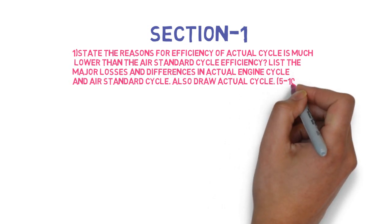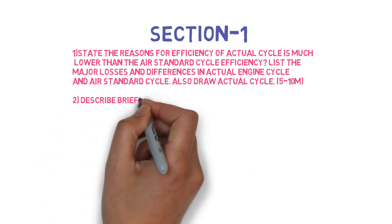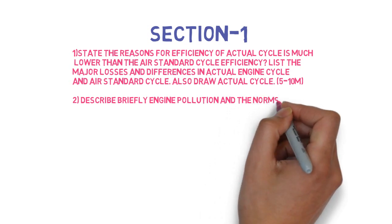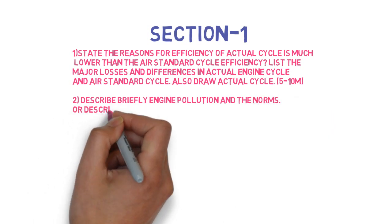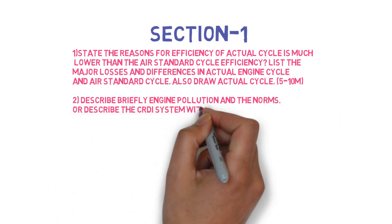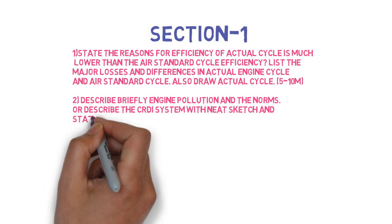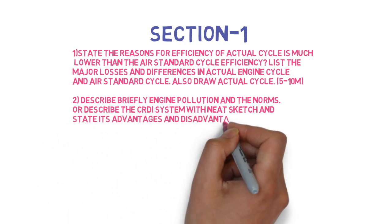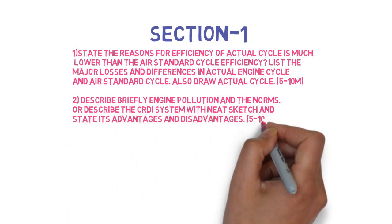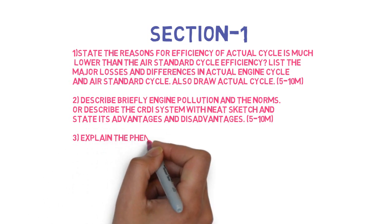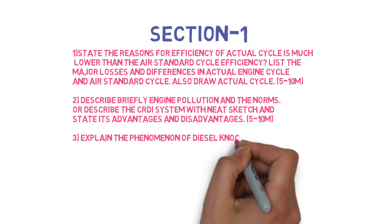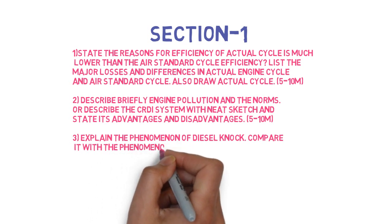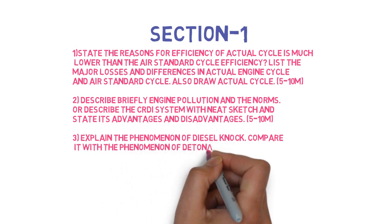Next question is: Describe briefly engine pollution and norms, or describe CRDI system with neat sketch and its advantages and disadvantages. This can come for 10 marks. Next is: Explain the phenomenon of diesel knock and compare it with detonation in SI engines. This can come for 5-10 marks.